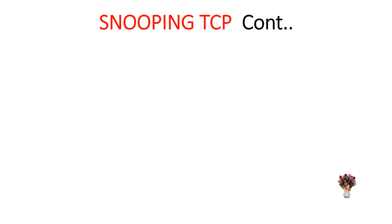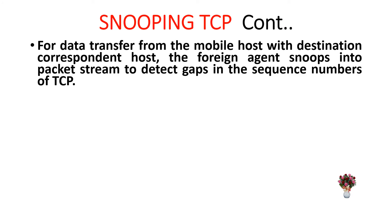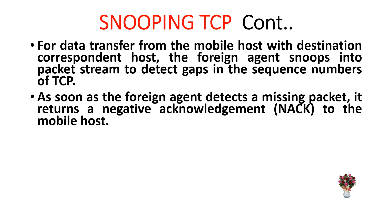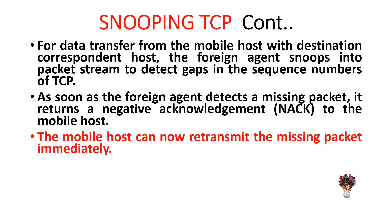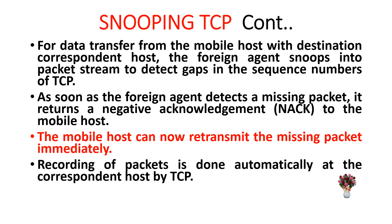For data transfer from the mobile host to the correspondent host, the foreign agent snoops into the packet stream to detect gaps in the sequence number of TCP. As soon as the foreign agent detects a missing packet, it returns a negative acknowledgement — that is, NACK — to the mobile host. The mobile host can now retransmit the missing packet immediately. Reordering of packets is done automatically at the correspondent host by TCP.